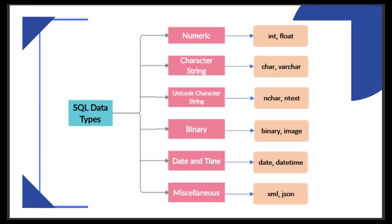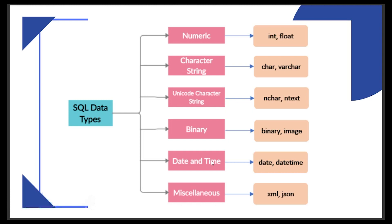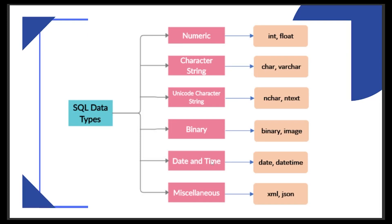These are the SQL data types which are frequently used. First is numeric, which has int and float. Int is used to store integer numbers and float is used to store decimal numbers. Then we have character string, which has char and varchar. Char means it has a fixed length. For example, if you have defined the length of a character as 10 in the char data type, then you can store only characters which have a length of 10.